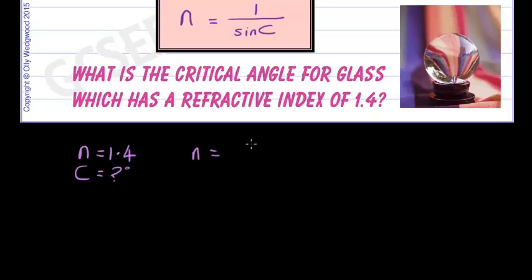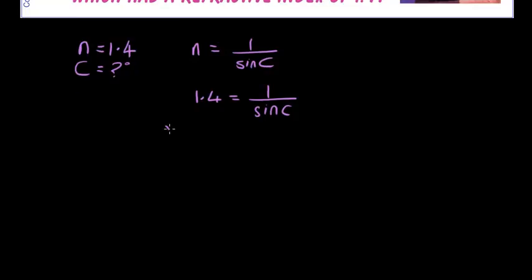Let's use the equation N equals 1 over sine C and now let's put the numbers in. So we've got 1.4 is equal to 1 over sine C. We need to rearrange this a little bit. Let's multiply both sides by sine C. So we get 1.4 sine C equals 1 and let's divide both sides by 1.4 so that we can try and get C as the subject or nearly. So that will be sine C equals 1 over 1.4.